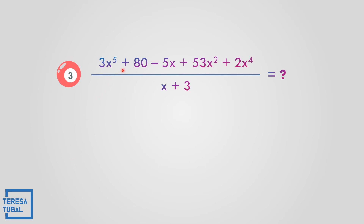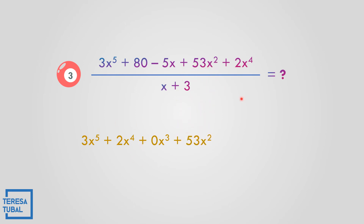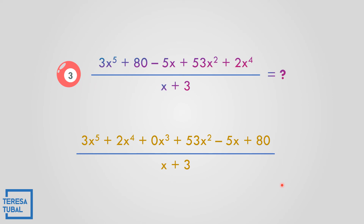Question number 3: divide 3x to the fifth plus 2x to the fourth plus 53x squared minus 5x plus 80 by x plus 3. Arrange: 3x to the fifth, then 2x to the fourth. There is no x cubed term, so write 0x cubed. Next is 53x squared, then negative 5x, and then 80. Divide all by x plus 3.